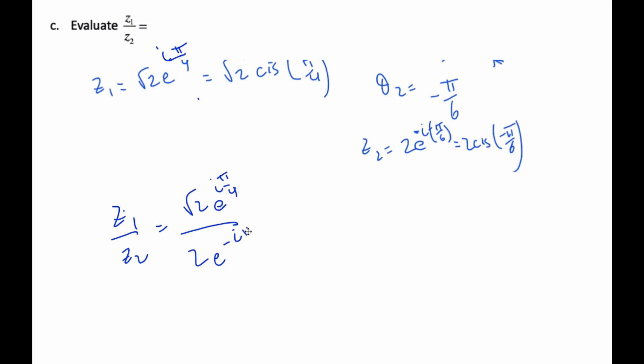So I get root 2 over 2 e to the i, and now again I'm going to take my fraction 3 pi by 12, and I'm going to subtract the negative 2 pi by 12,